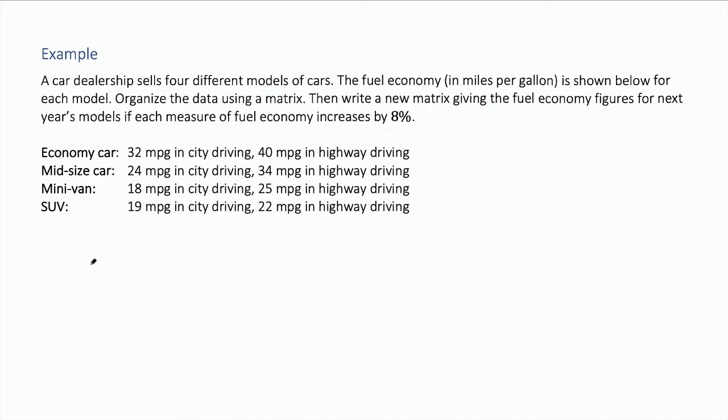Starting with our fuel economy for this year, notice that we've got each type of car - economy, midsize, minivan and SUV. And then we have a categorization of city driving versus highway driving. And so that's going to create the structure of our matrix.